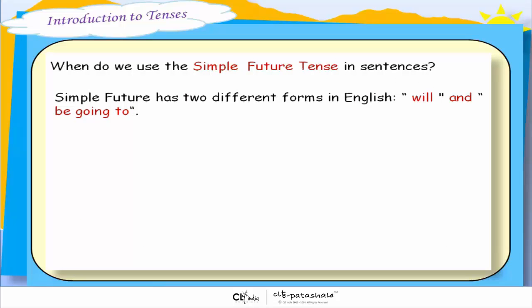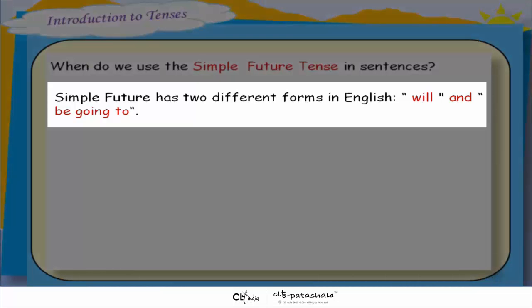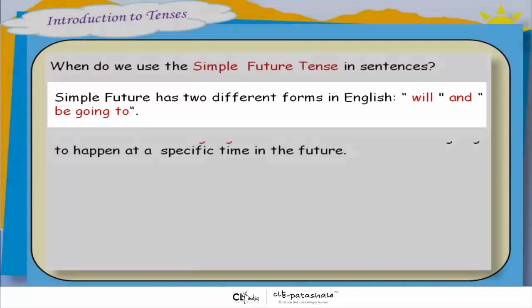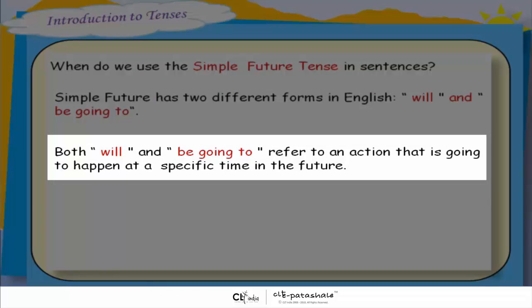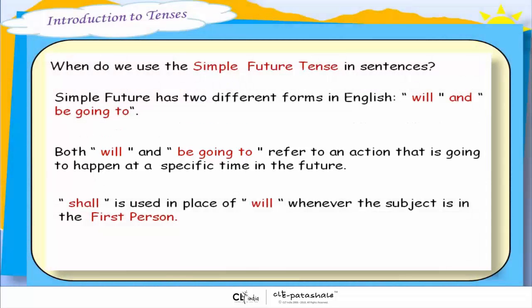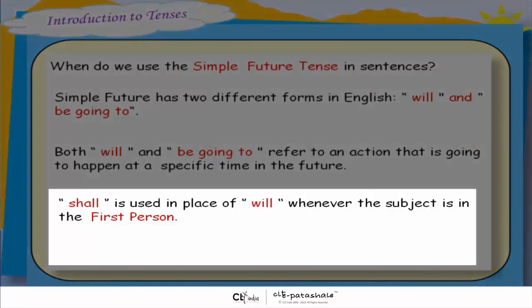When do we use the simple future tense in sentences? Simple future has two different forms in English. Both 'will' and 'be going to' refer to an action that is going to happen at a specific time in the future. 'Shall' is used in place of 'will' whenever the subject is in the first person.